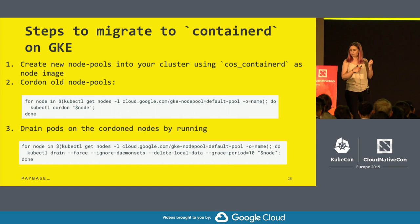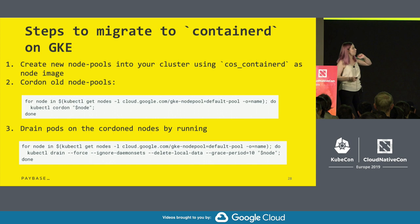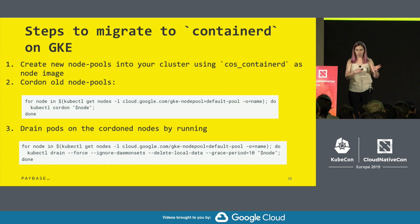Steps to migrate to ContainerD on GKE: first, create a node pool in your cluster using COS ContainerD. Then cordon those old node pools using that command. Then drain the existing pods and wait for them to be recreated on your new node pools running ContainerD. It's quite straightforward.